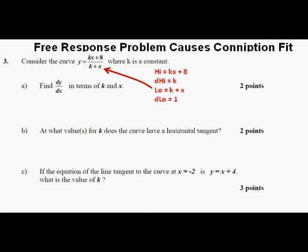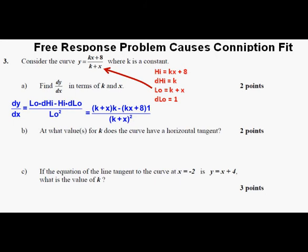So dy/dx equals the low times the derivative of the high, minus the high times the derivative of the low, over low squared — that's just the quotient rule for differentiating. Putting in the pieces, we have dy/dx equals (k plus x) times k, minus (kx plus 8) times 1, over (k plus x) squared. Distributing the k and the 1, we have k squared plus kx minus kx minus 8, over (k plus x) squared.